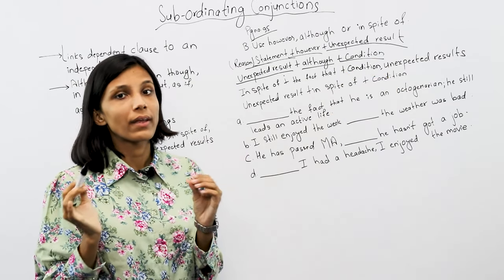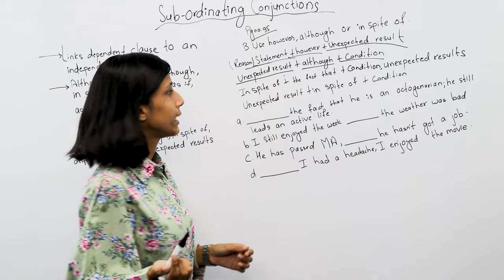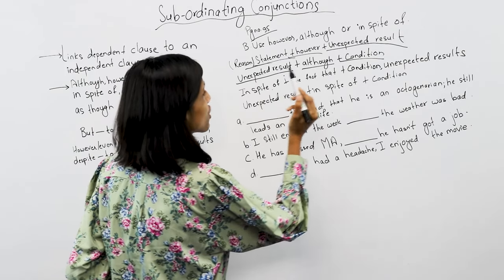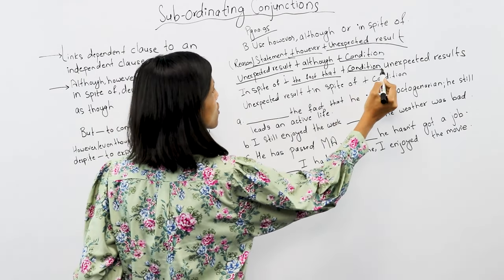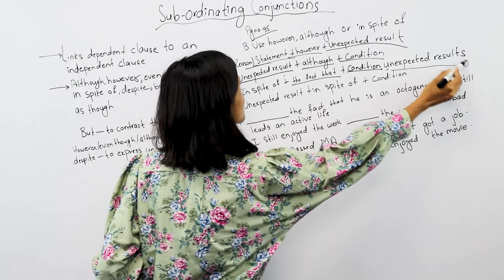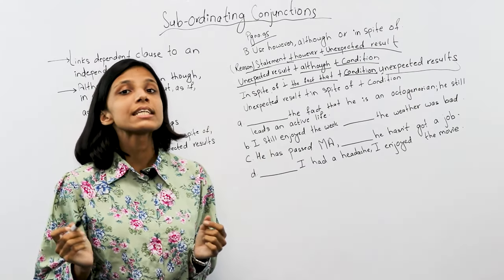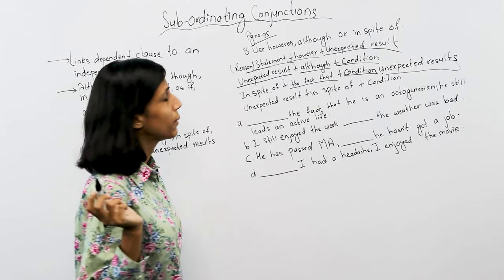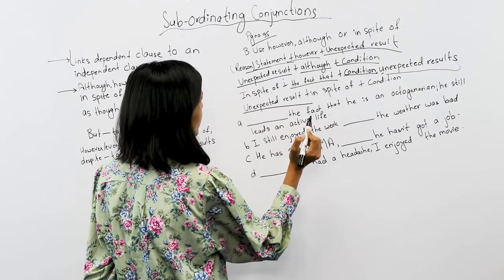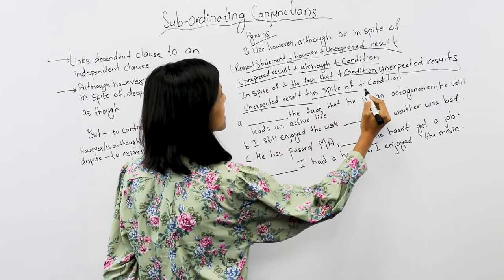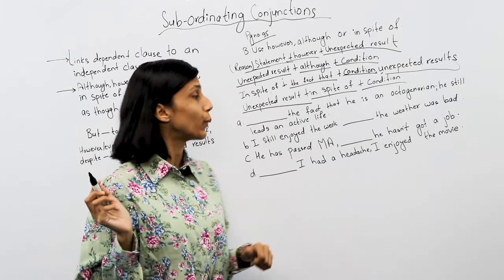With 'however,' there is a condition in the beginning. With 'in spite of,' we add the fact and put the condition in the beginning. We will put the unexpected result in the beginning and work on these structures.